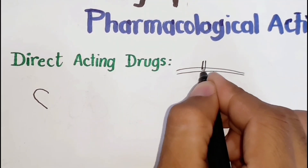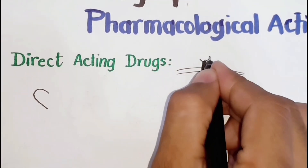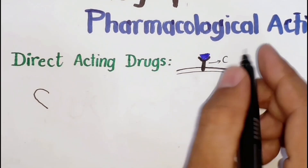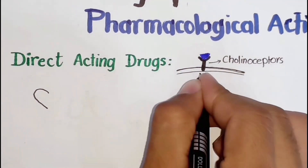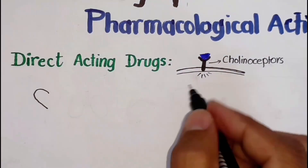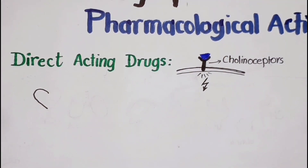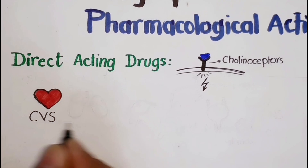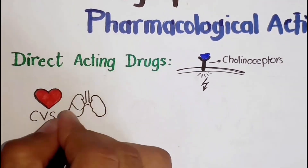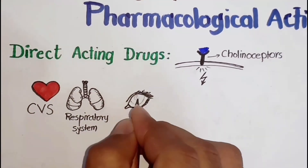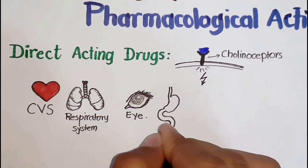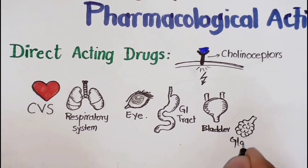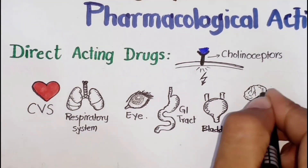Direct acting drugs show their effects by binding to cholinoreceptors found on different organs of our body. These include the cardiovascular system, respiratory system, eyes, GI tract, urinary bladder, glands, and nervous system.